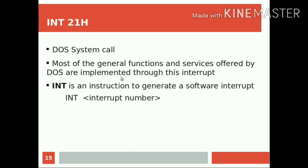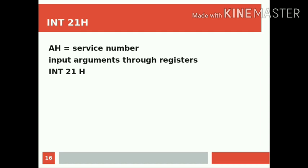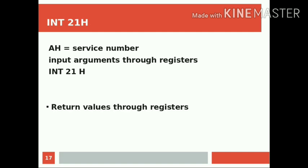Next is how we can access I/O services through INT 21H. For selecting a specific service from the DOS services, we have to mention that service number through the AH register. Then, the required input arguments are given through some specific registers. We then call INT 21H, and after executing it, the corresponding service will be executed. If there are any return values, those will be available through some other registers.